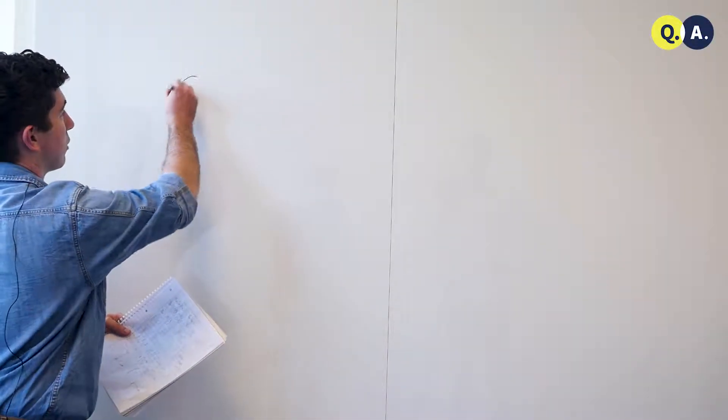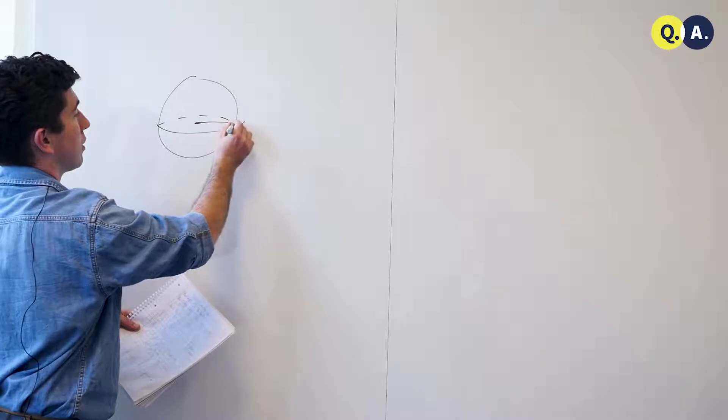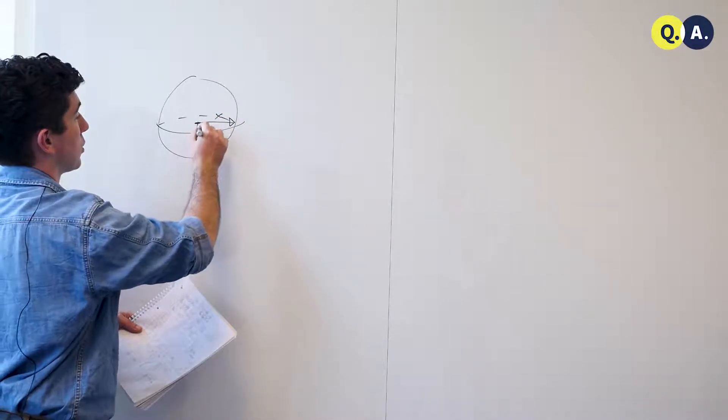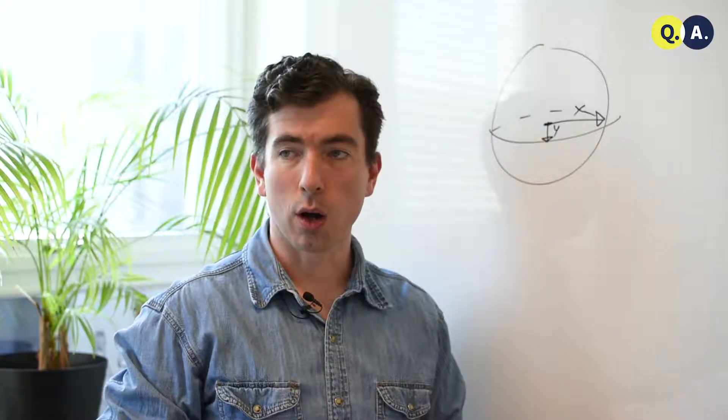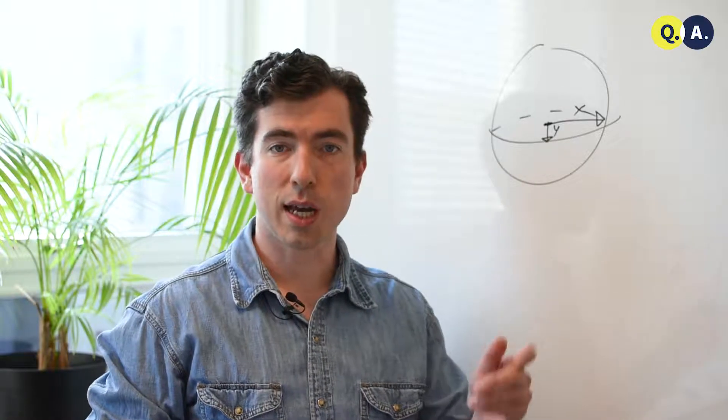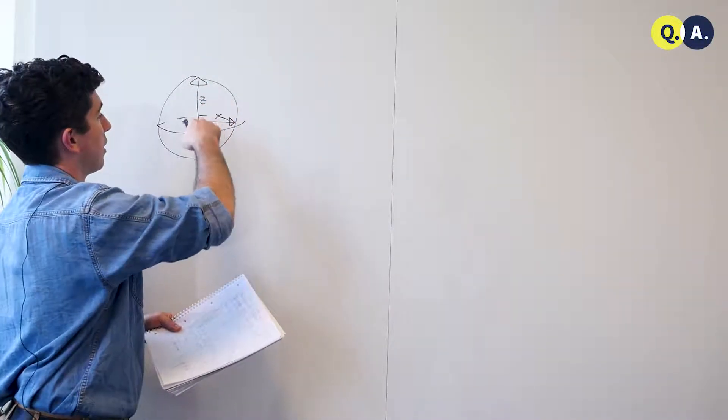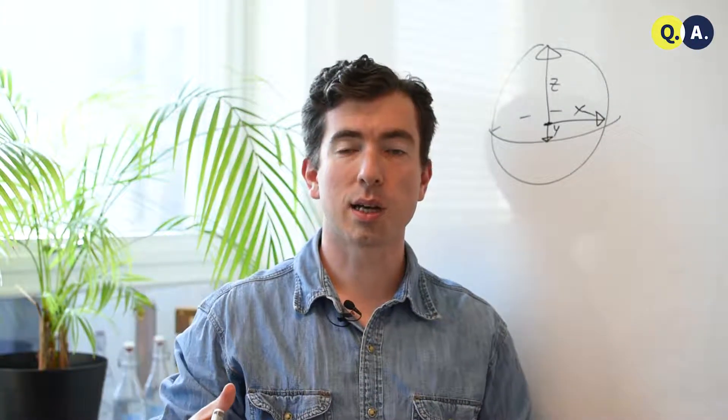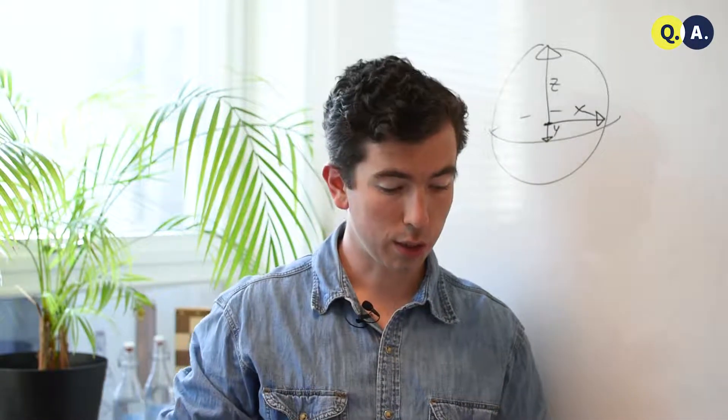In many experiments, experimentalists can only rotate around two axes of the Bloch sphere. That's the x-axis, which goes in this direction, and the y-axis, which is going this way. Many algorithms rely on rotations around the z-axis, which is independent from these other two, and we'd like to see how to synthesize z-rotations out of the tools that we have available, x and y-rotations.